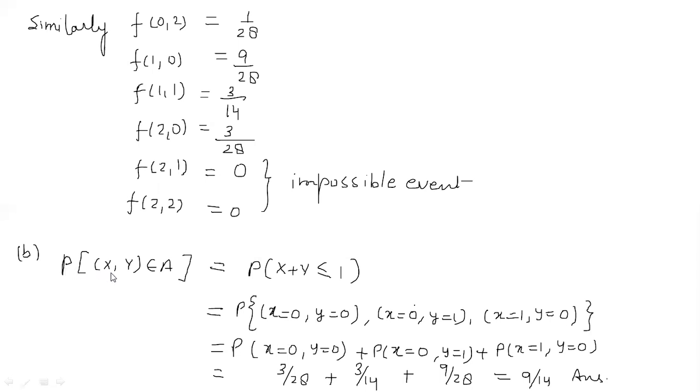Part B tha. Probability hum ne nikalhi hai x, y belongs to A, where A is the region such that x plus y less than equal to 1. To hum yeh dekhengi x aur y ke kaun se aise pair hai jinn ka sum less than equal to 1 hai. To ye 0,0 hai, 0,1 hai, 1,0 hai.